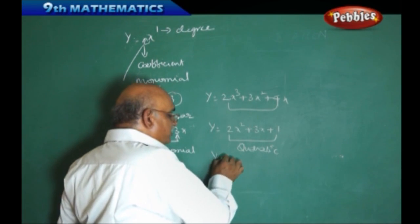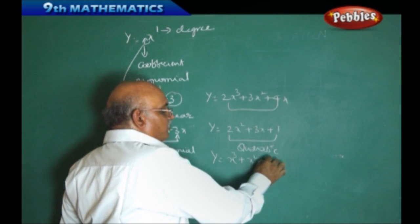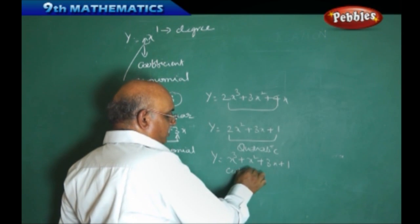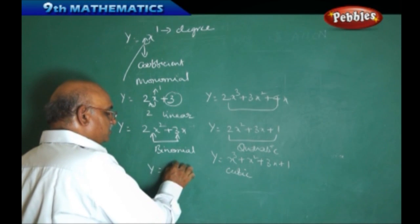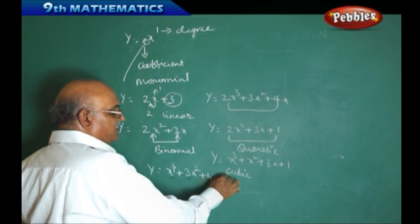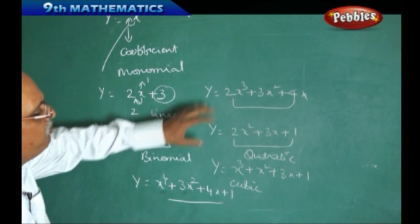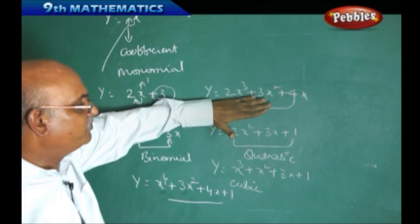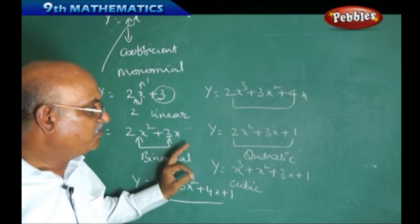In the same manner, if I take y equal to x cube plus x square plus 3x plus 1 — this is called a cubic polynomial. Similarly, y equal to x to the power 4 plus 3x square plus 4x plus 1 — this is called a biquadratic polynomial. Depending upon the power of x, we can define what sort of degree polynomial it is. These are the certain points which we have to remember.